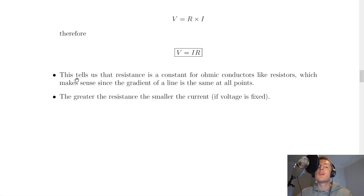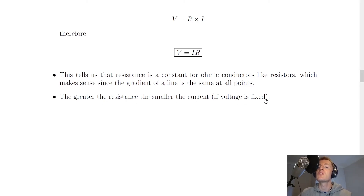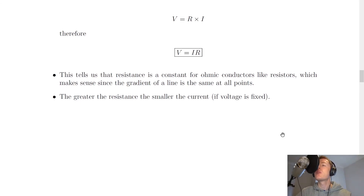Resistance is constant for ohmic conductors like resistors, which makes sense since the gradient of a straight line is the same at all points. The greater the resistance, the smaller the current if the voltage is fixed. Voltage and current both change in the same way, so it's very important to remember that for an ohmic conductor like a resistor, resistance stays the same.